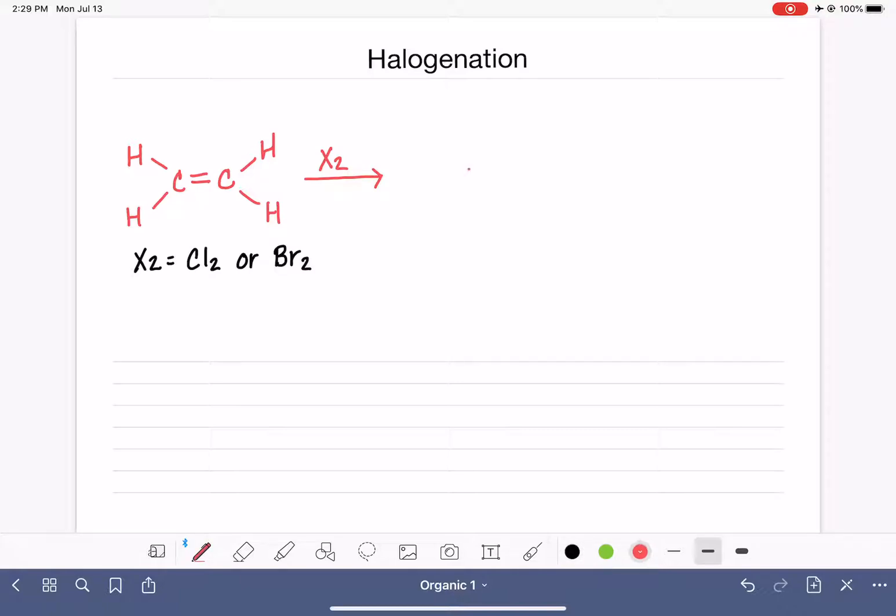In this reaction, we're going to add the halogen molecule to the carbon-carbon double bond, which will turn it into a single bond. We're going to add one halogen to each carbon of the alkene, and they add anti to each other, which is what I've represented here. So they add in opposite directions or on opposite sides of the double bond.